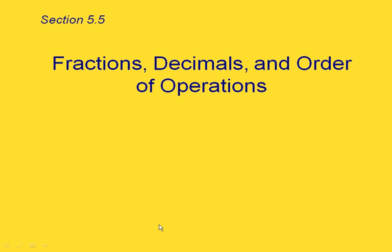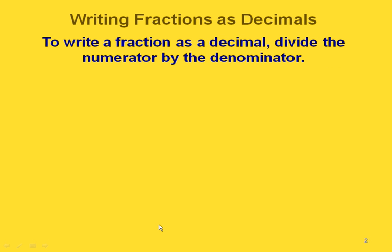This is section 5.5 on fractions, decimals, and order of operations. First we're going to talk about writing fractions as decimals. To write a fraction as a decimal, we simply have to divide the numerator by the denominator.